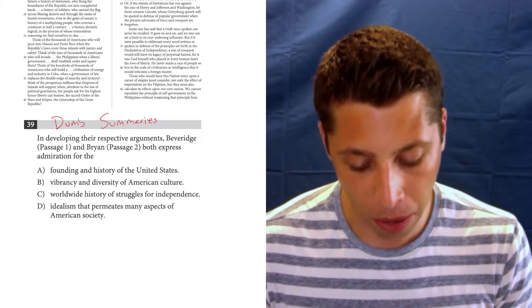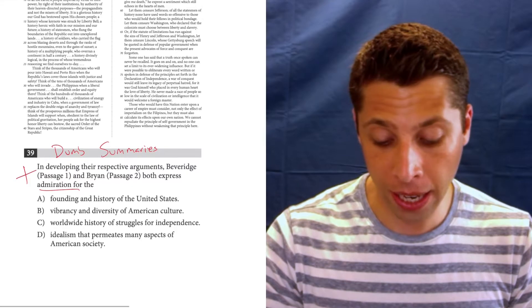So this question is set up perfectly for that. It says, in developing their respective arguments, Beverage and Bryan both express admiration. So we're looking for a positive connotation. Well, from what we read in passage one, for the other questions that were about passage one, we know it's very positive. Noble land, feed and clothe the world, nobler destiny, mighty people. We know that this whole thing is positive.